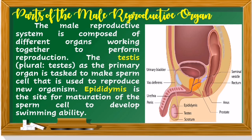The male reproductive system is composed of different organs working together to perform reproduction. The testes, or plural testes, are the primary organs tasked to make sperm cells used to reproduce new organisms. The epididymis is the site for maturation and function of the sperm cell — specifically for the sperm to develop swimming ability.